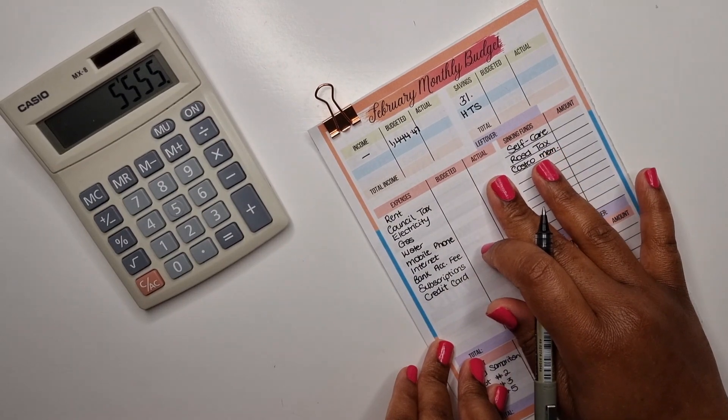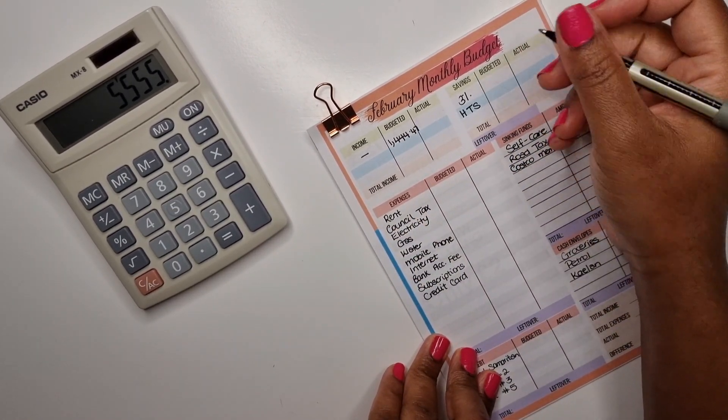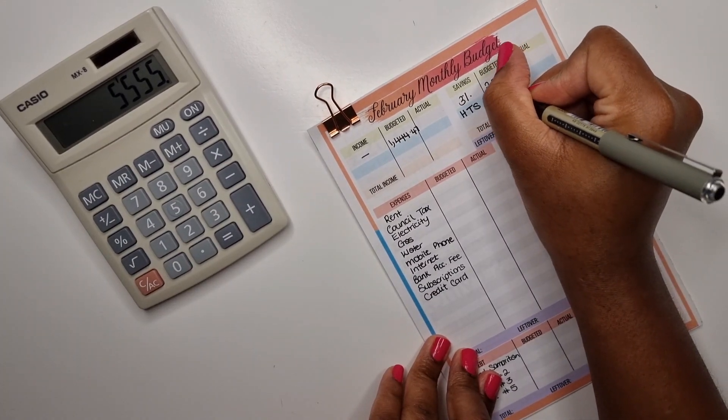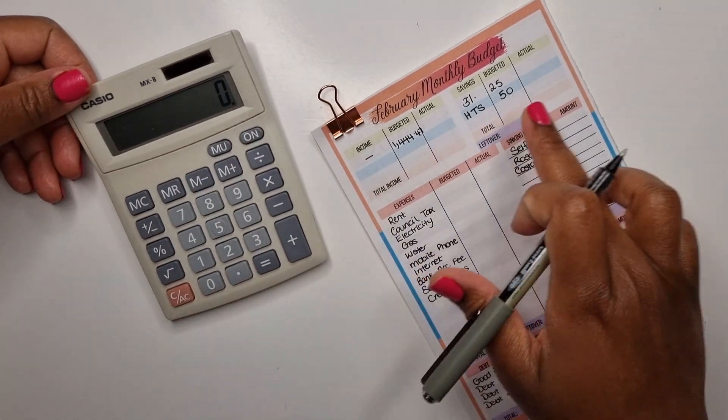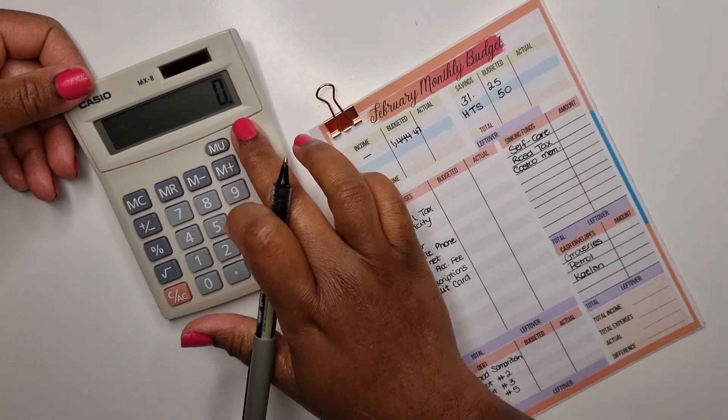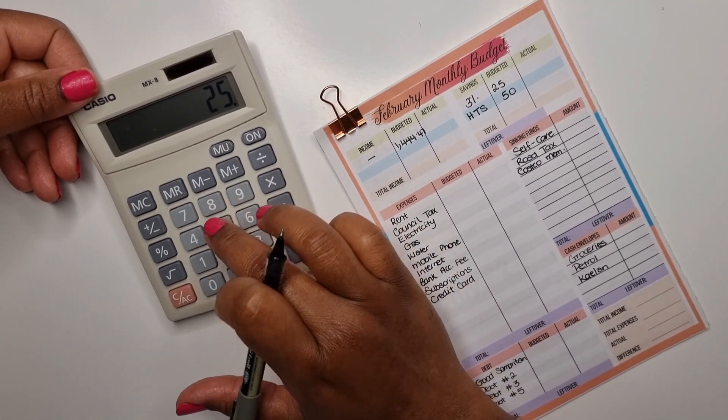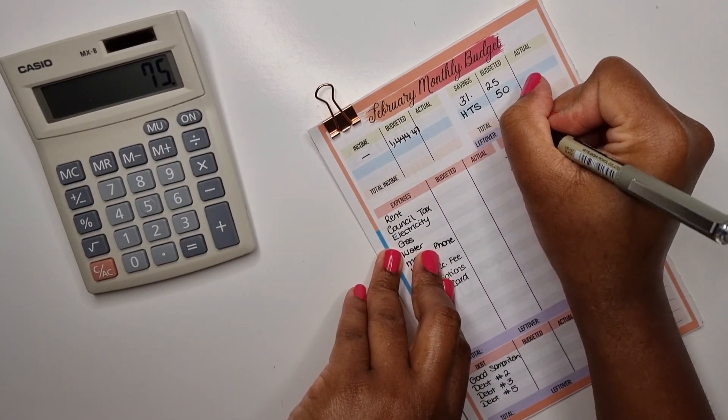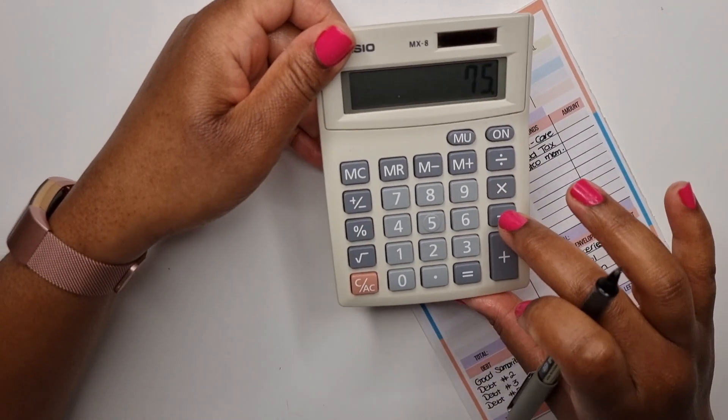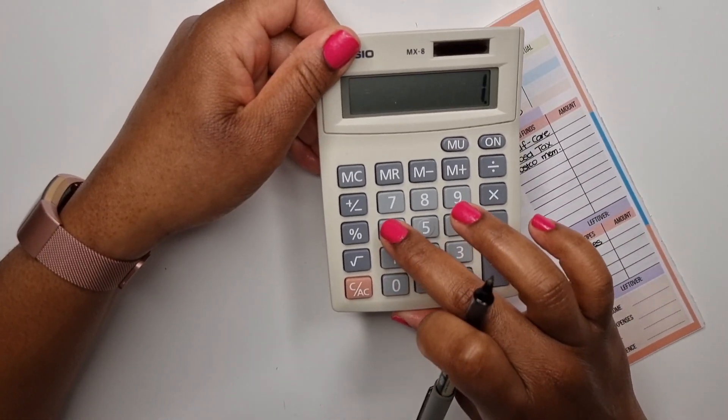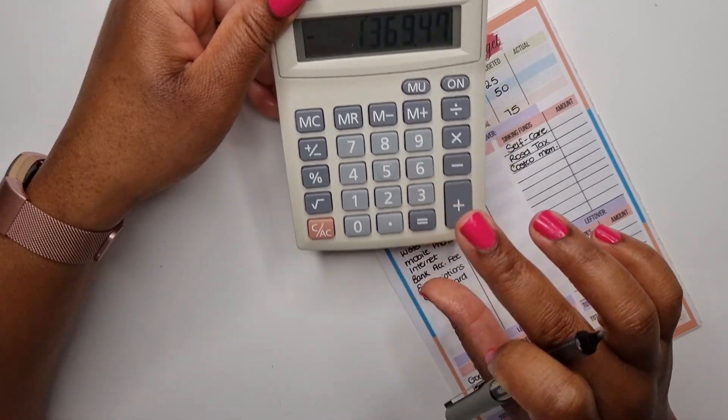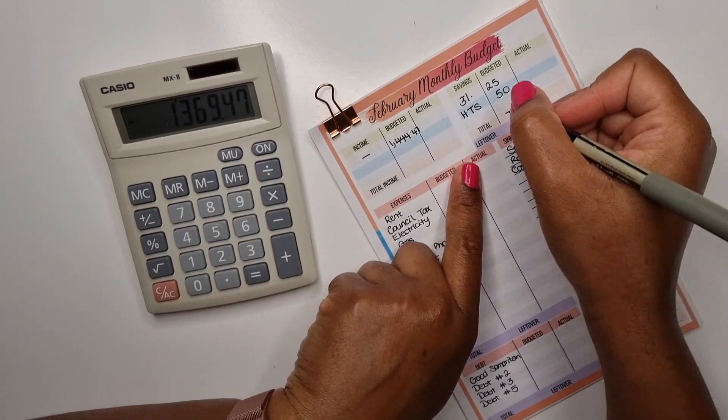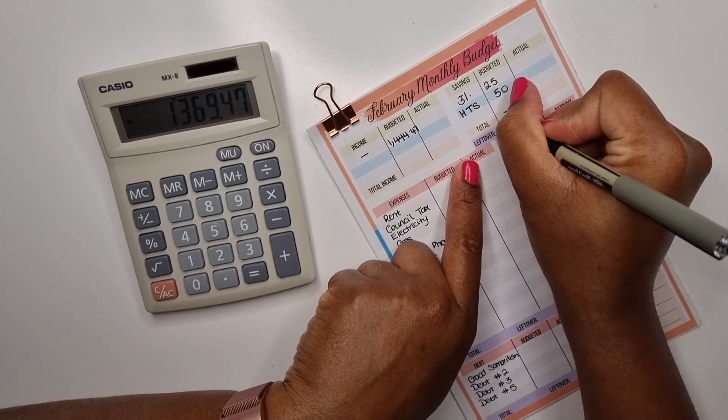We're going to move across to our three percent saving, and this is usually twenty-five pounds, and my help to save is fifty. So we've got twenty-five plus fifty is seventy-five. We put that in our total box: seventy-five. And we are going to subtract our seventy-five from one thousand four hundred forty-four point four seven. That gives us one thousand three hundred and sixty-nine pounds forty-seven pence.